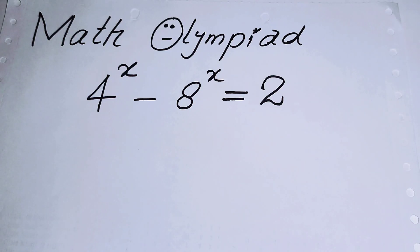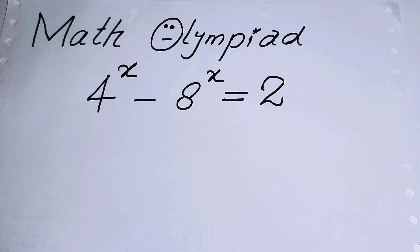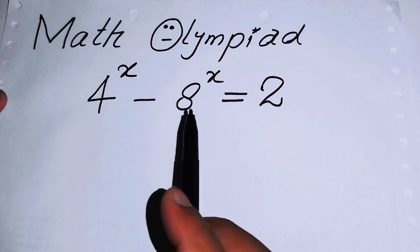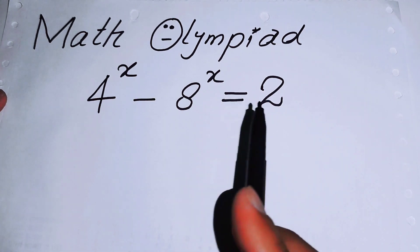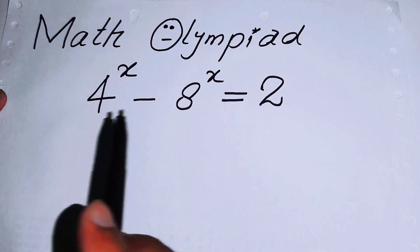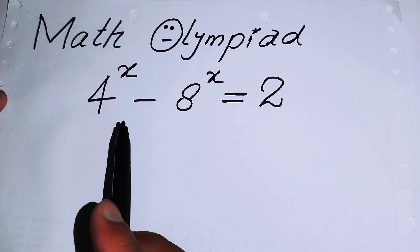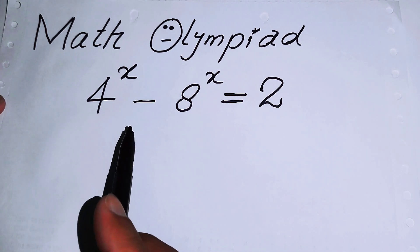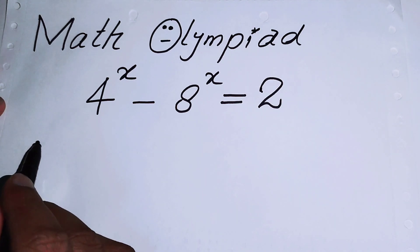Hello everyone, welcome back to the Map of Mathematics. In this video we are going to solve this exponential problem: 4 to the power of x minus 8 to the power of x is equal to 2. We will solve this exponential problem for the value of x.